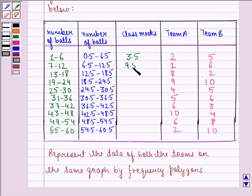9.5, 15.5, 21.5 and so on. Now with this table we draw a graph and then we have to make frequency polygons for team A and team B.